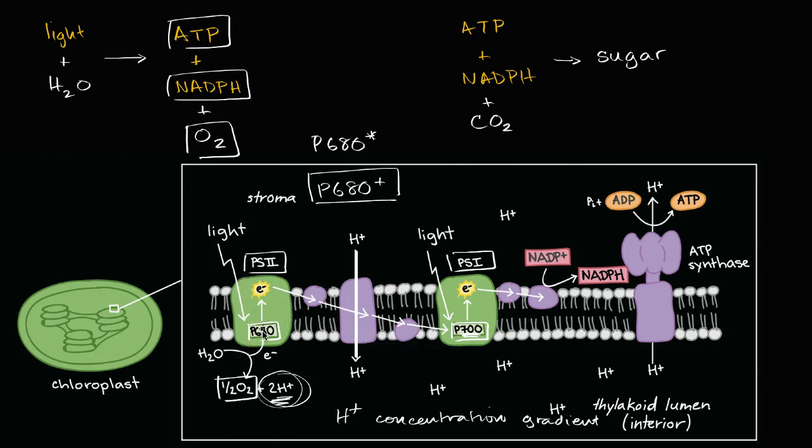And so that's why you'll often see these diagrams. Light comes in, electron gets energized, it gets excited, it goes to lower and lower energy states. As it's doing that, it's being transferred from one molecule to another, being facilitated by enzymes.